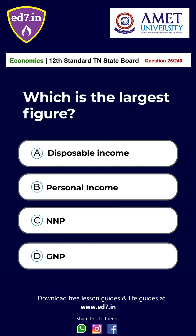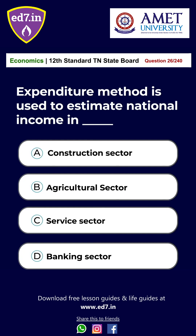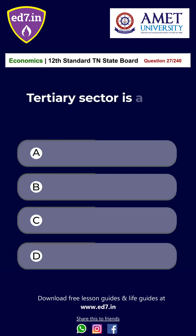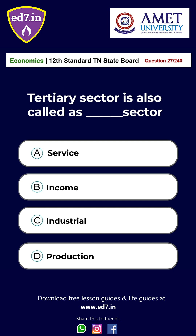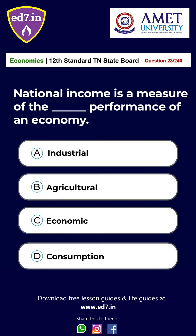Question 25: Which is the largest figure? A. Disposable income, B. Personal income, C. NNP, D. GNP. The answer is Option D: GNP. Question 26: Expenditure method is used to estimate national income in — A. Construction sector, B. Agriculture sector, C. Service sector, D. Banking sector. The answer is Option A: Construction sector. Question 27: Tertiary sector is also called the — sector. A. Service, B. Income, C. Industrial, D. Production. The answer is Option A: Service. Question 28: National income is the measure of the economic performance of a country. The answer is Option C: Economic.